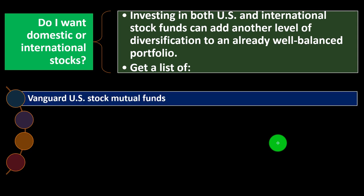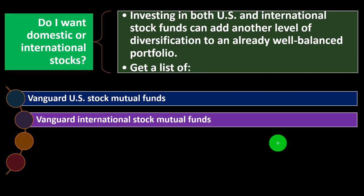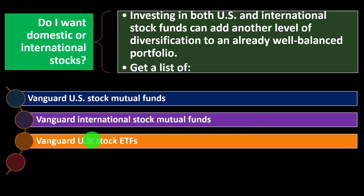Vanguard offers both US stock mutual funds and international stock mutual funds. As individual investors using mutual funds, options could range from one mutual fund covering all stocks and bonds, to separate funds for bonds and stocks, to a mutual fund covering all US stocks, to multiple funds covering different segments. We might want mutual funds covering all international stocks, or multiple index funds giving exposure to specific international markets — depending on how much complexity and control we want in our investment strategy.